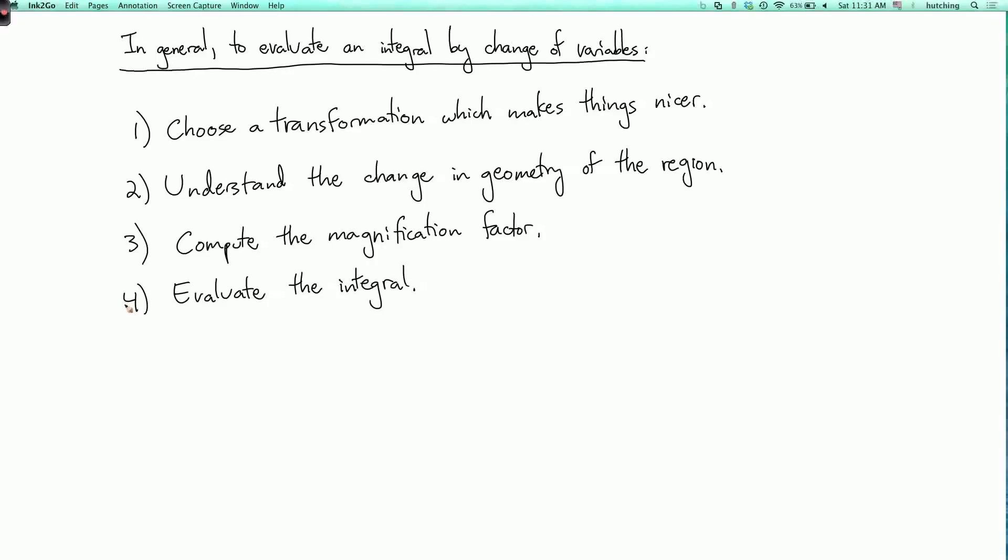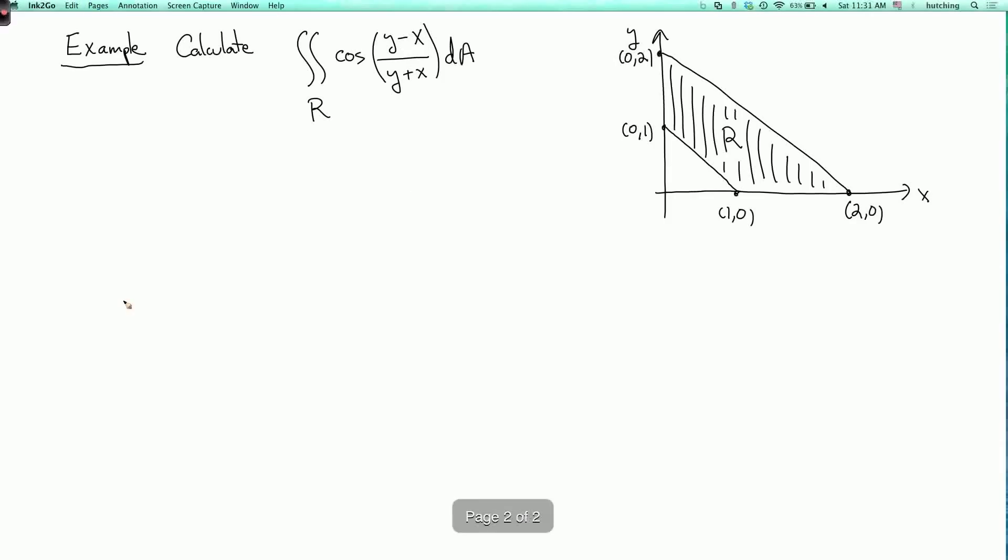So let's do an example to see how this works. The problem we're going to consider is how do we calculate the double integral over R of cosine of y minus x over y plus x dA, where R is the region shown. So it's bounded by a quadrilateral.